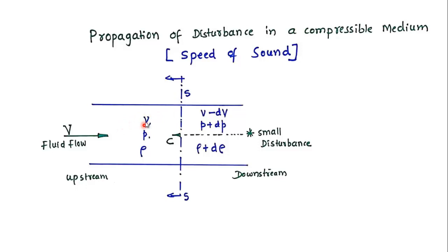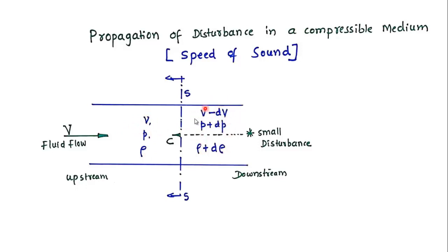Consider two sections: on one side, velocity is v, pressure is p, and density is rho. On the other side, because of the disturbance traveling through a compressible medium by elastic forces, the fluid is compressed — so the velocity is reduced, pressure increases, and density increases. This gives us two regions with different sets of parameters due to the compressibility effect.